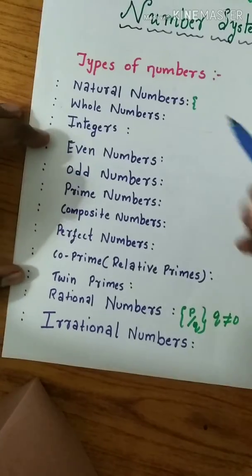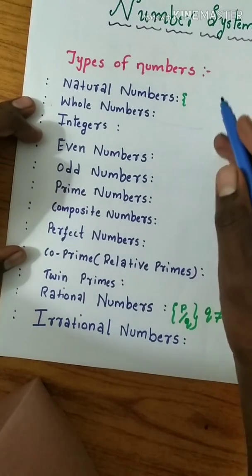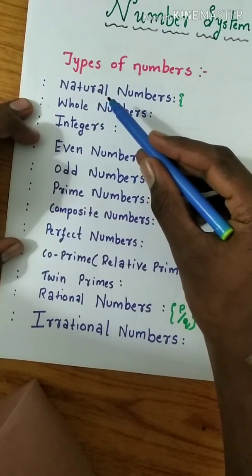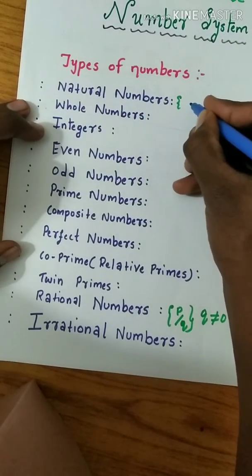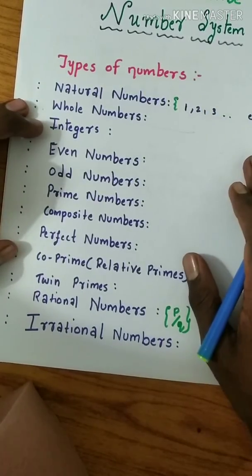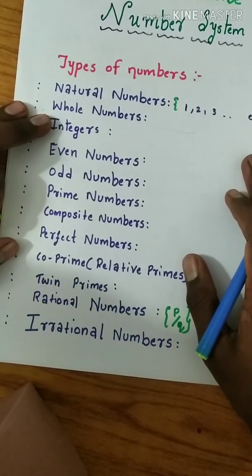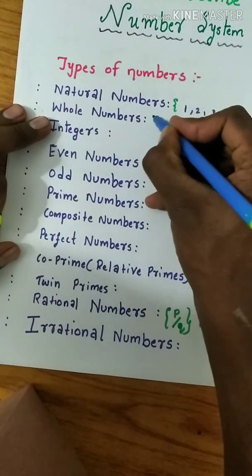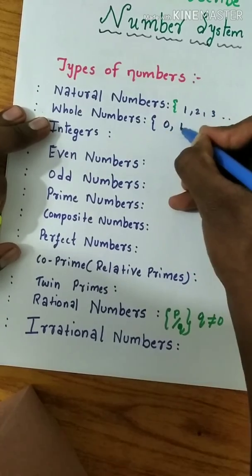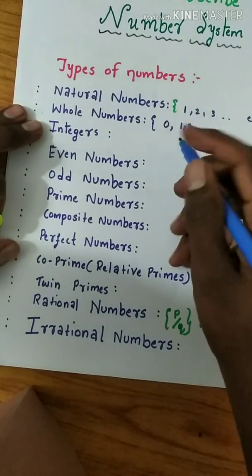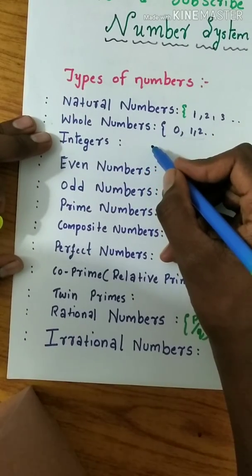Natural numbers - all the numbers which are countable like 1, 2, 3, etc. Whole numbers are the same as natural but beginning with 0, 1, 2, etc. Integers - all counting numbers, 0, and negative of counting numbers form the set of integers.